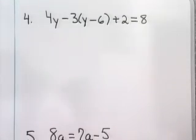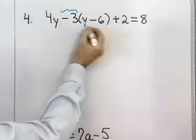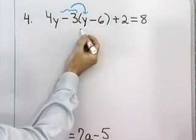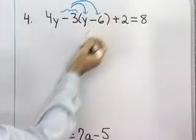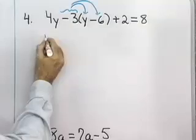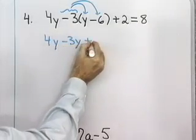I have 4y minus 3 times the quantity y minus 6 plus 2 is equal to 8. I'm going to start by distributing the 3 over the y minus 6, and I'm going to take the negative sign with it when I multiply. So it will be negative 3 times y, negative 3 times negative 6, thinking of subtraction as addition of the opposite.